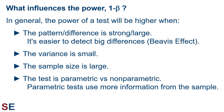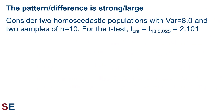Let's take a look at each of these four factors by examining some two-tailed, two-sample, homoscedastic t-tests comparing the means of two populations. If you don't know this test well, you can check out our video on the two-sample t-test on this channel. Consider two populations each with a variance of 8, and we'll take two samples of size 10 from each. The critical value for 18 degrees of freedom and an alpha value of 0.025 will be 2.101.